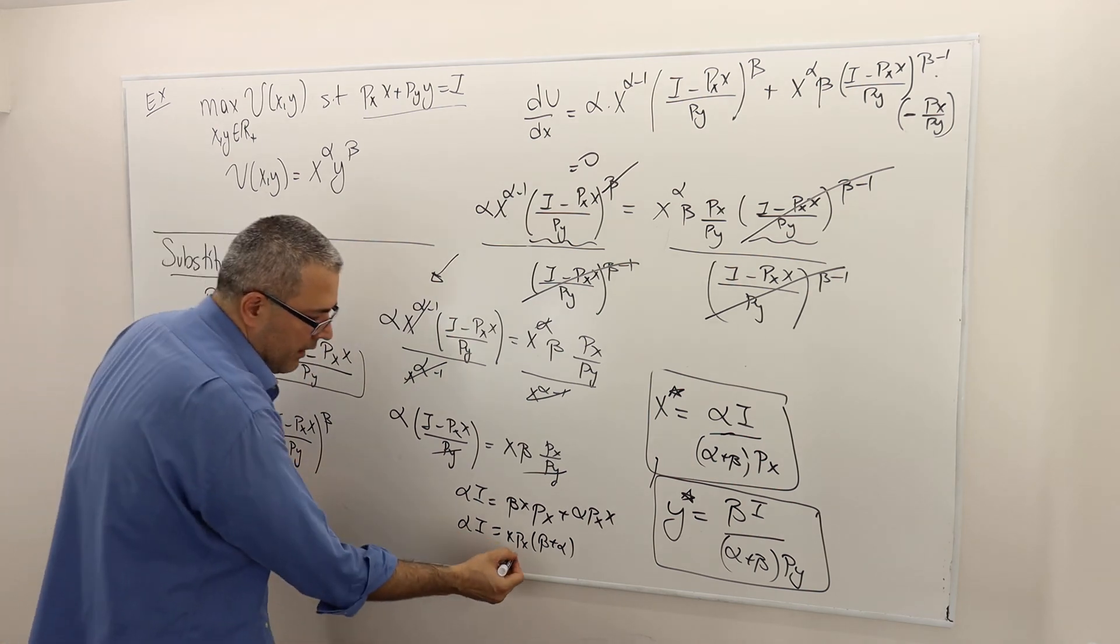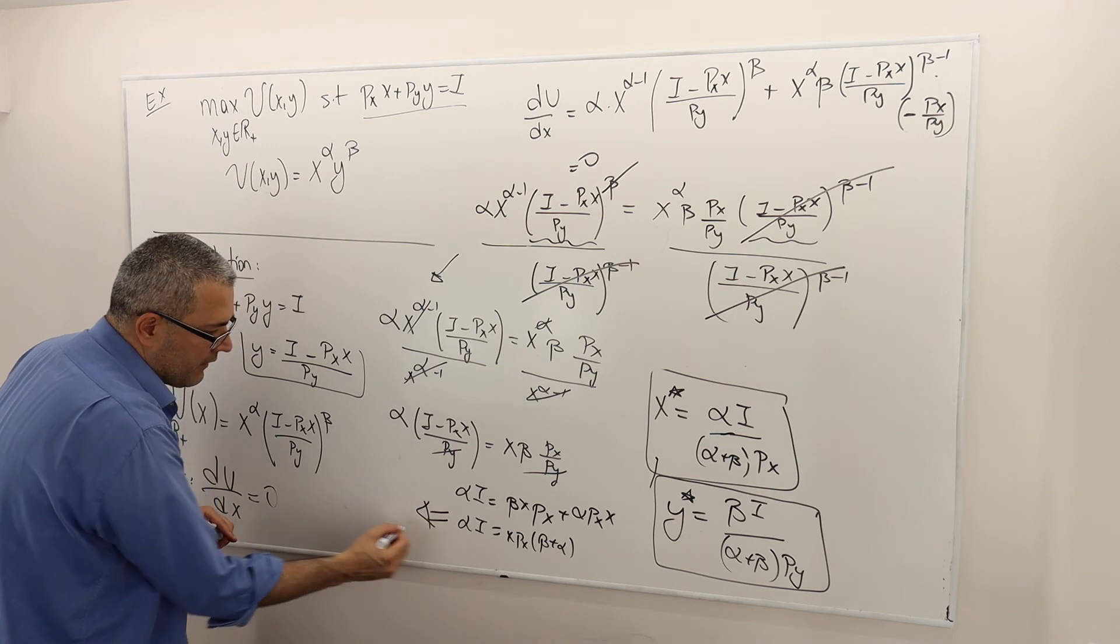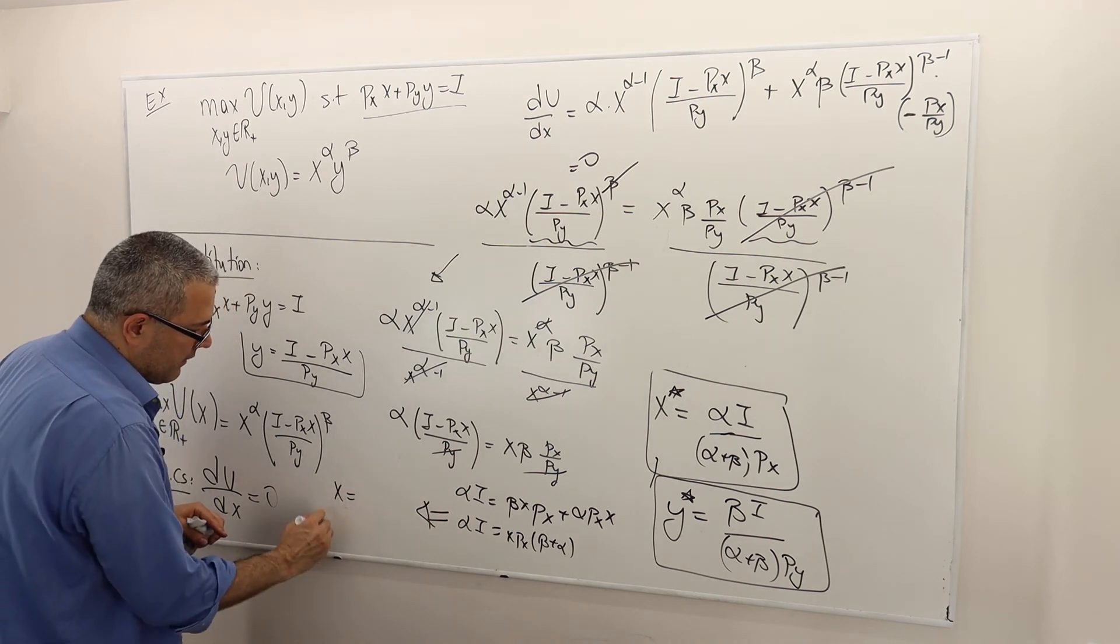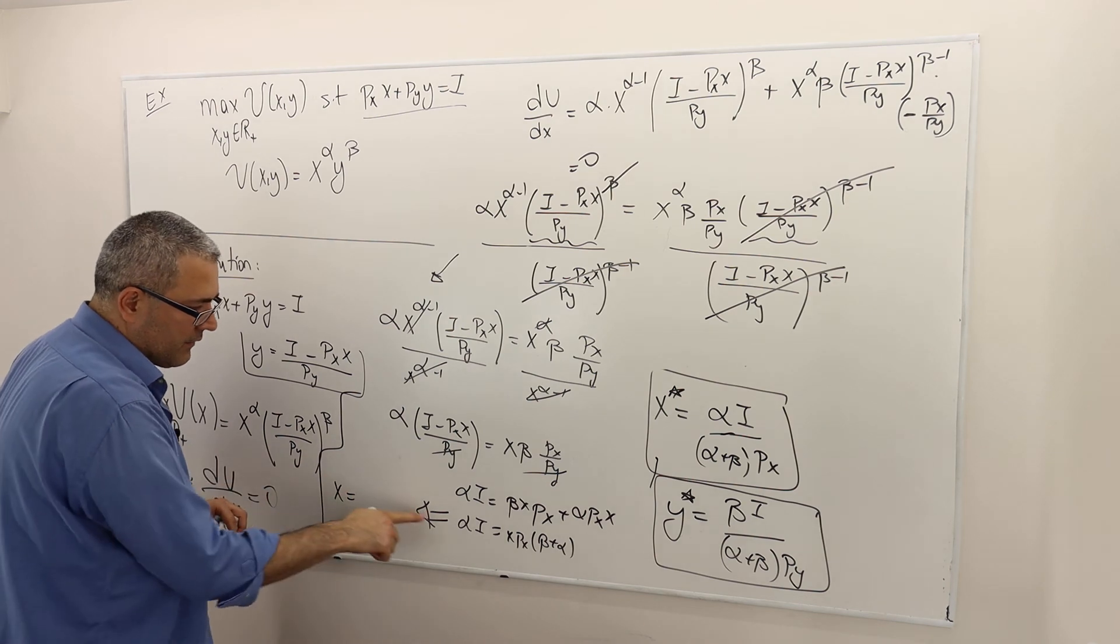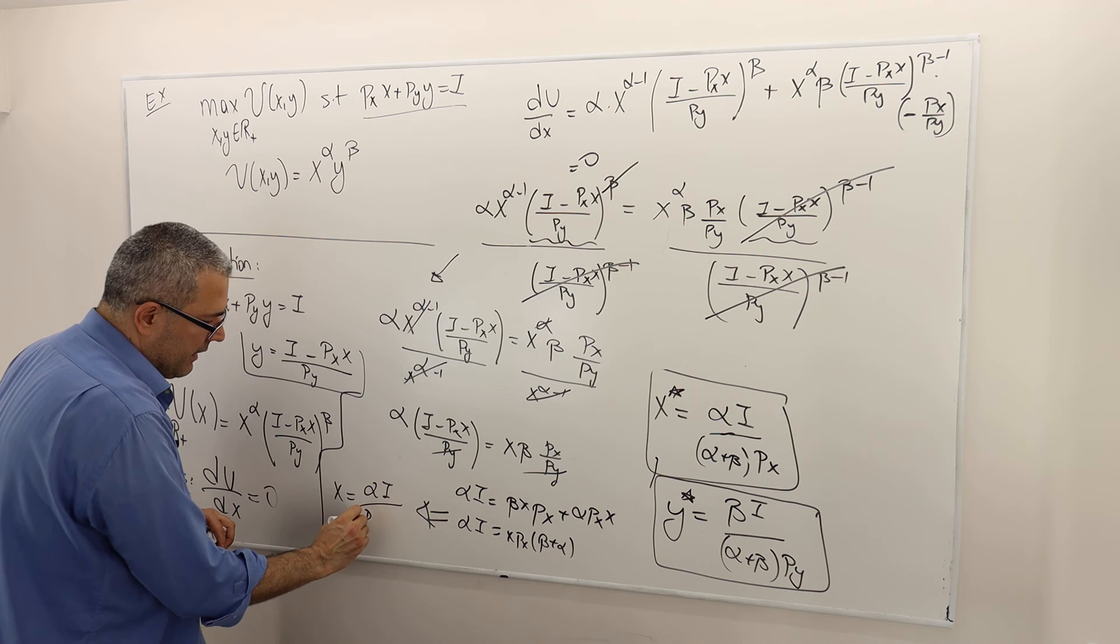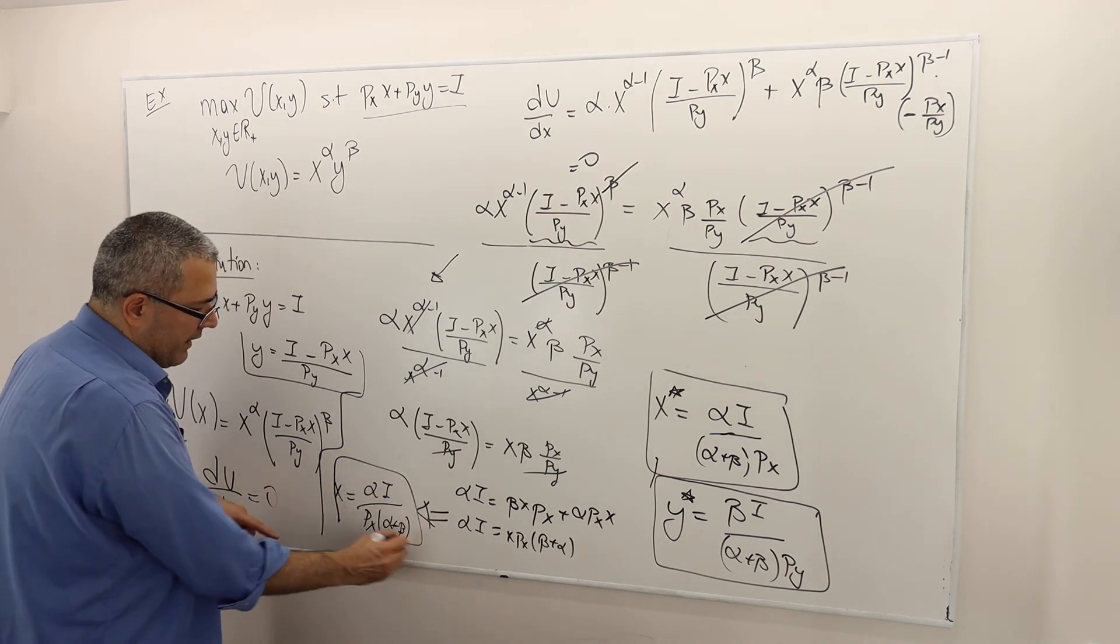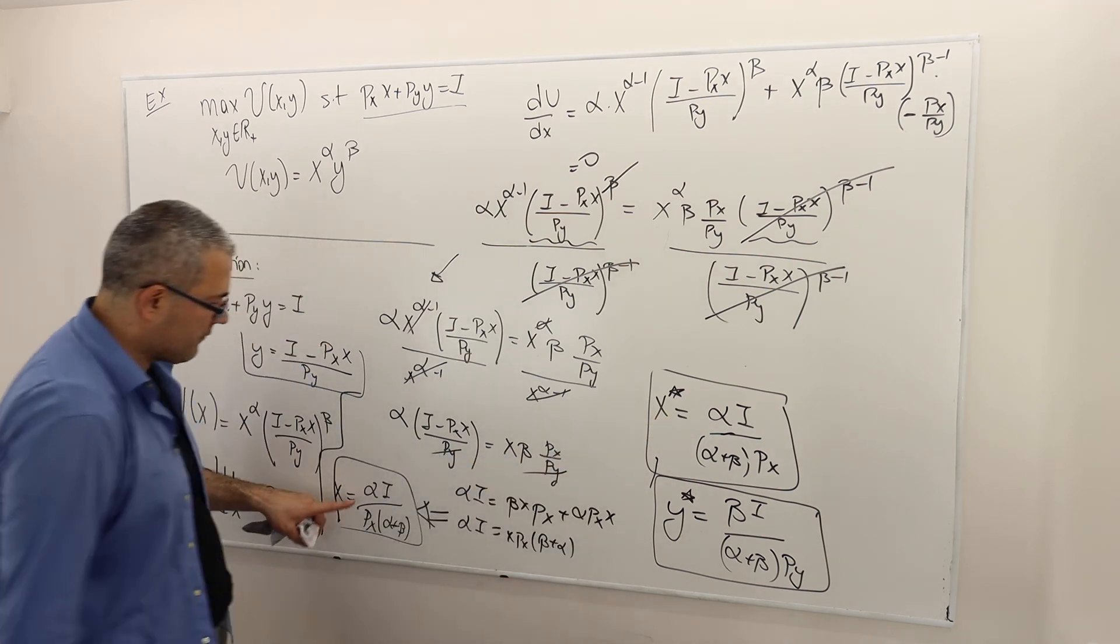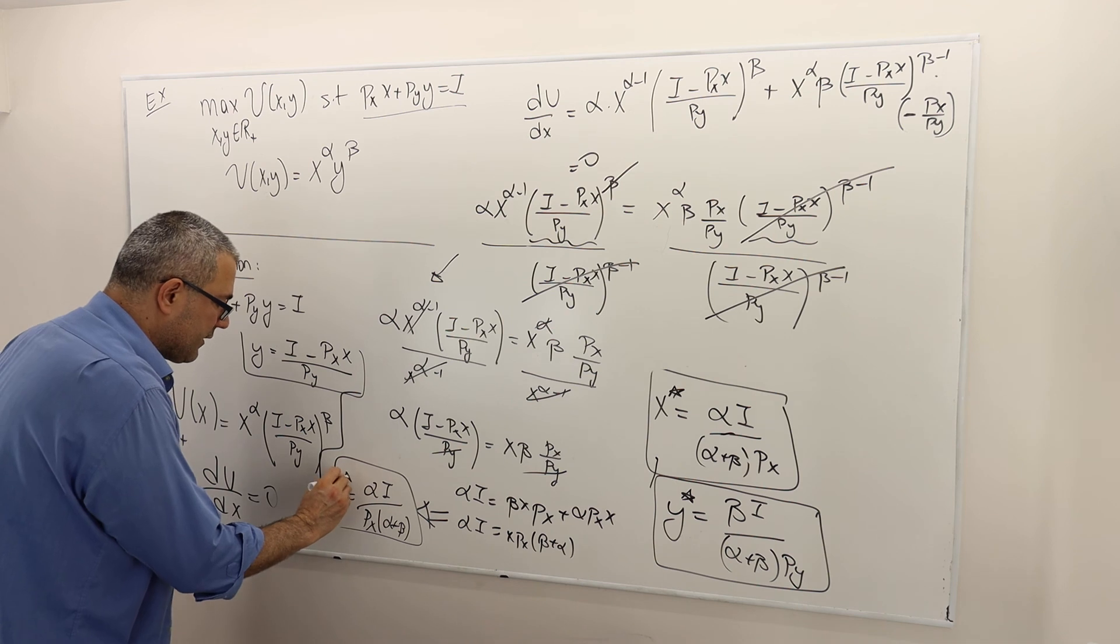So divide both sides by PX alpha plus beta. So that basically means the X guy is equal to alpha income divided by PX times alpha plus beta or beta plus alpha. Doesn't matter. Do we get exactly the same result? Yep, we do. Perfect. So that's X star.